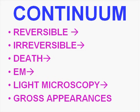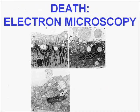Let's talk about looking at injuries and deaths morphologically. As you progress from reversible to irreversible changes and then death, you can very early see changes at the electron microscopy level, followed by changes at the light microscopy level, and eventually grossly. Here's an EM in which you can see microvilli, well-formed vesicles, and organelles in the cytoplasm — cells alive and functioning normally.